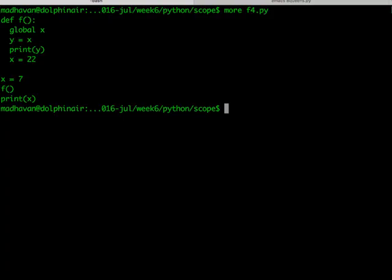Here is that global code. We have global x, and just to make sure that the x equal to 22 inside is actually affecting that x outside, we have a print x at the bottom of the main program. X was 7 before f was called, but x got set to 22 inside f, so we'd expect the second print statement to give us 22.